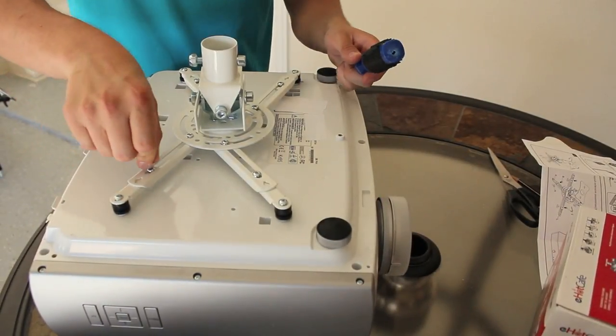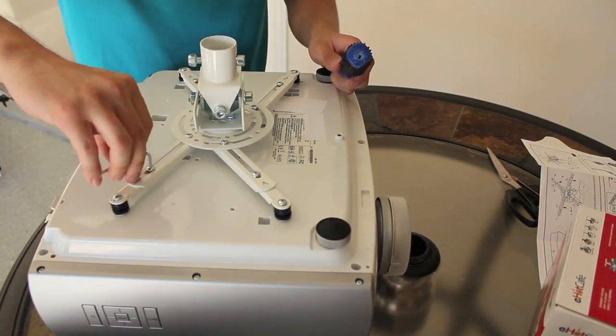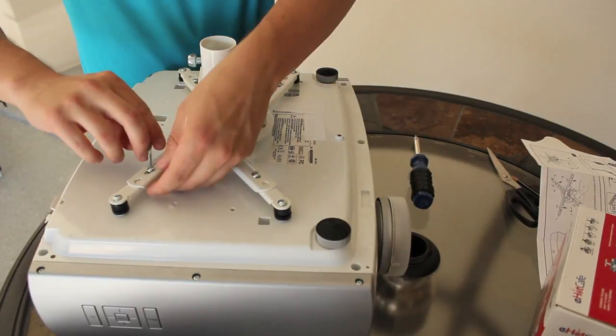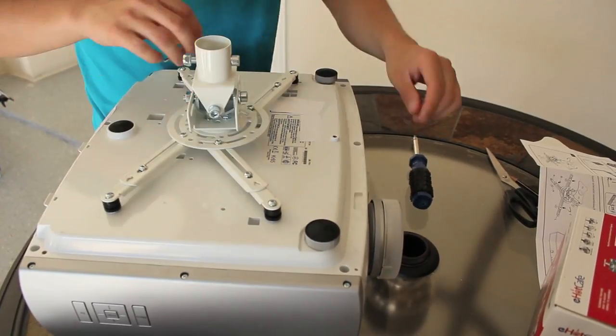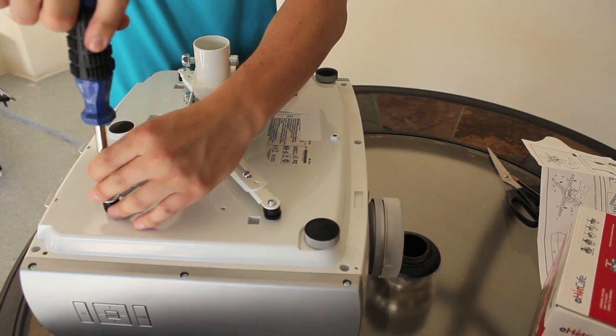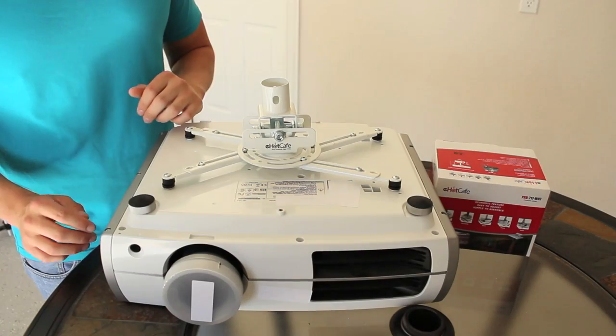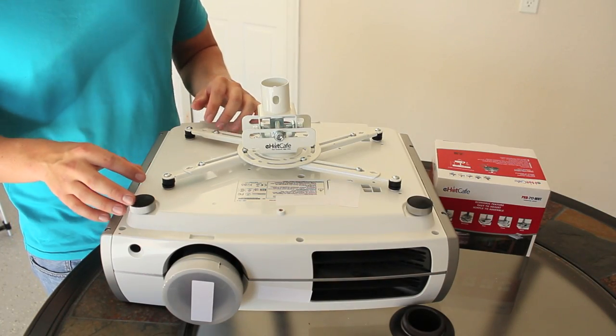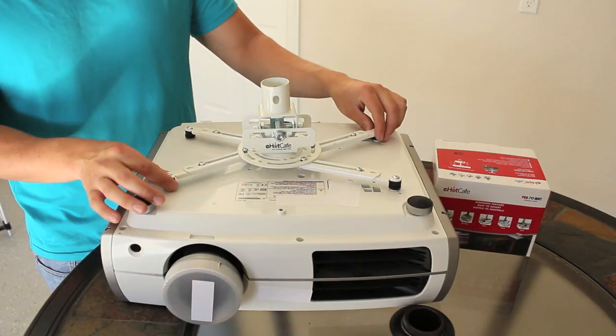Once you have the spacers on here, all that's left to do is just go ahead and tighten it up the rest of the way that needs to be. The finished product for the E-Hawk Cafe 717 should look something just like this.